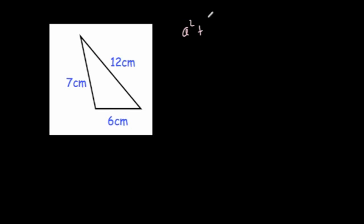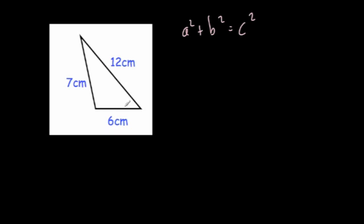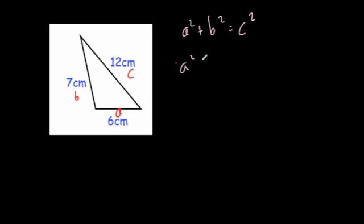Here we've got a triangle. We'll begin with a squared plus b squared equals c squared, and use Pythagoras' theorem to show whether this is a right-angled triangle or not. The shorter sides are 6 and 7, and the longest side is 12. So a squared plus b squared equals 6 squared plus 7 squared, which gives us 36 plus 49, equalling 85.